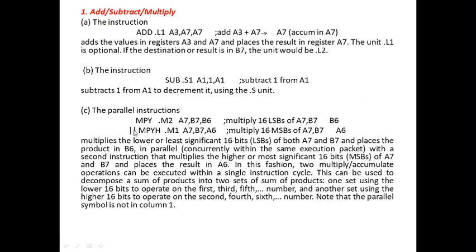In parallel, MPYH implies that it multiplies the higher order bits of A7 and B7 and stores the result in A6. So the first instruction multiplies the 16 lower bits and places the result in B6, concurrently with the second instruction that multiplies the higher bits of A7 and B7 and places the result in A6. In this fashion, two multiply-accumulate operations can be executed within a single instruction cycle, making it very convenient to implement a FIR filter MAC operation.